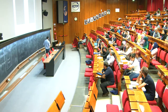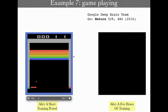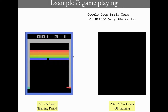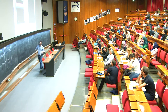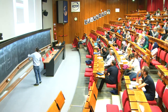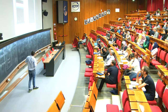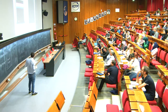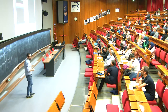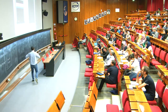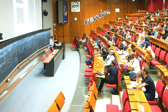A rather famous example for people born in the 80s: there's this game where you have a ball and a slider and you have to score as many points as possible. The Google DeepMind team in London trained a machine based on reinforcement learning that sees only the raw pixels of the screen and the final score, with the goal of maximizing that score.